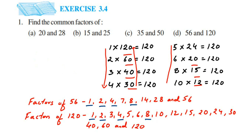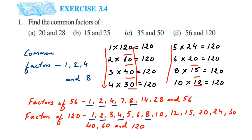Common factors of 56 and 120 are 1, 2, 4, and 8. That's it — we've done all four questions. I hope it's clear how to find the factors. For smaller two-digit numbers, you can check from the 1 to 10 table and do it this way. If you have any doubts, you can drop a comment. Thank you so much for watching.